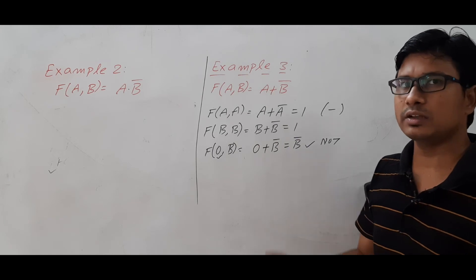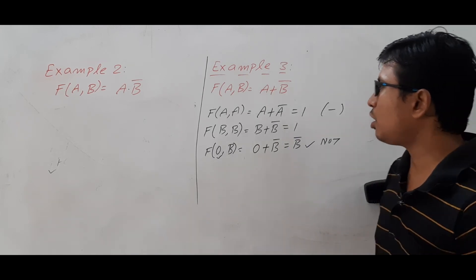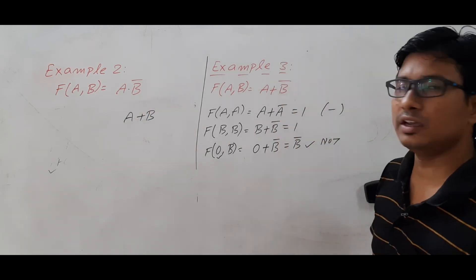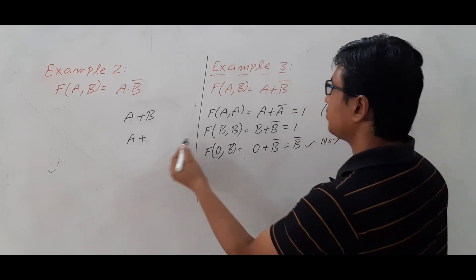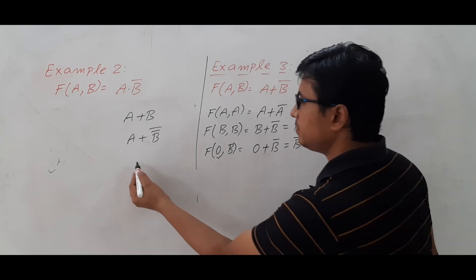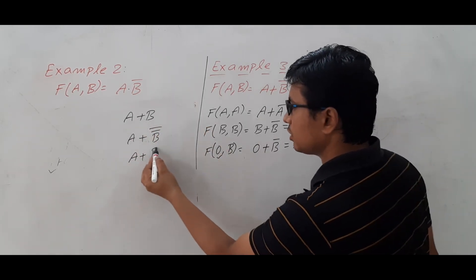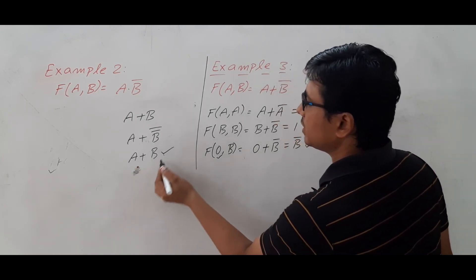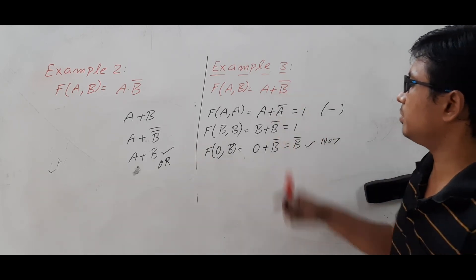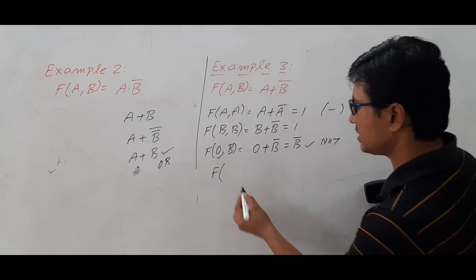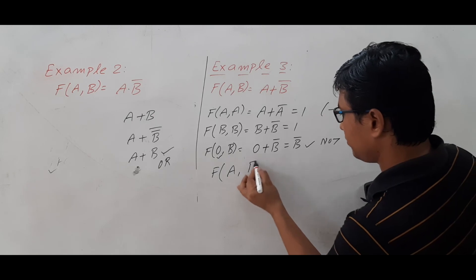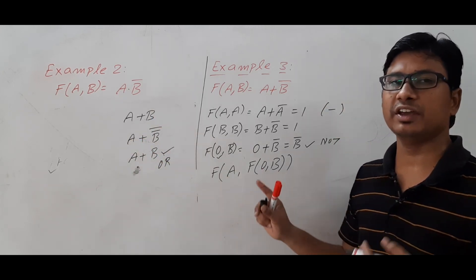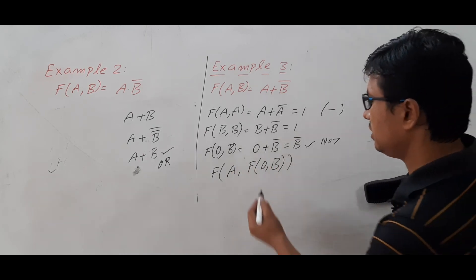Since OR is already present in the function, it should be easy to produce OR. I need to get a OR b. If I substitute a for a and b-complement for b, I get a OR b-complement-complement, which equals a OR b. But I cannot directly place b-complement in the input, so I use a nested function: f(a, f(0, b)). The inner function f(0, b) will give b-complement.